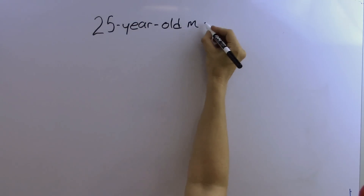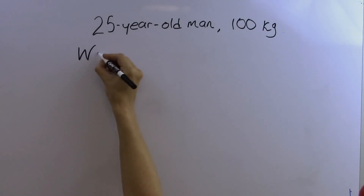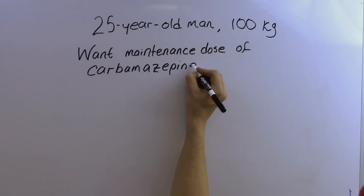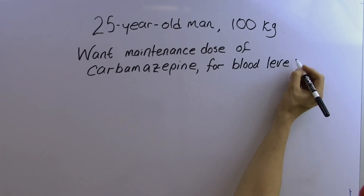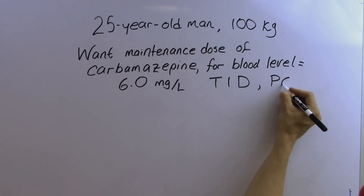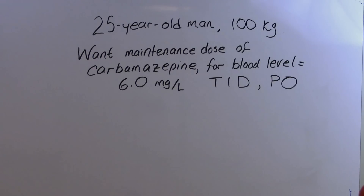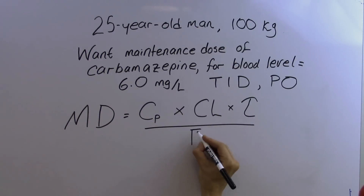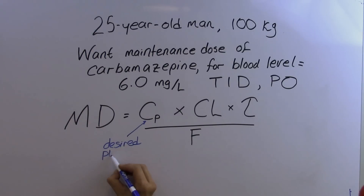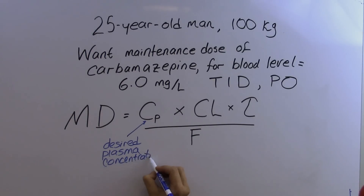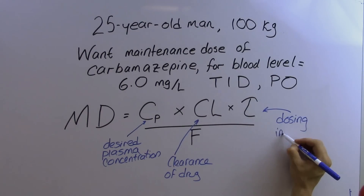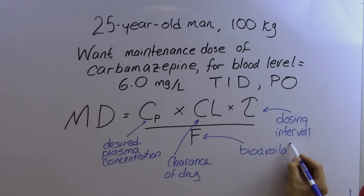Now let's do an example where we calculate a maintenance dose. We have a 25-year-old man who weighs 100 kilograms. We want to calculate a maintenance dose of the anti-seizure drug carbamazepine to produce a blood level of 6.0 milligrams per liter. The drug will be given three times a day by mouth. The formula uses CP as the desired plasma concentration, CL as the clearance, tau as the dosing interval, and F as the oral bioavailability.